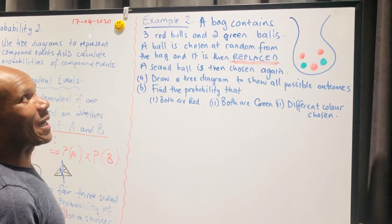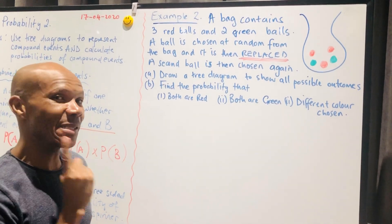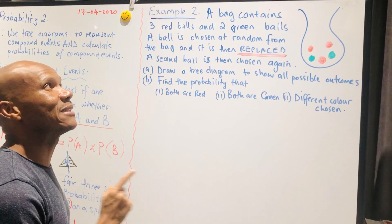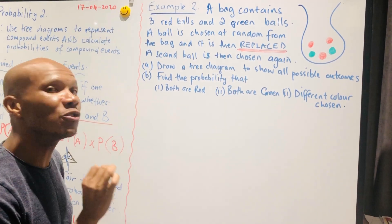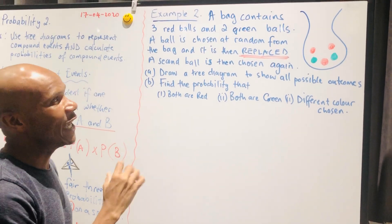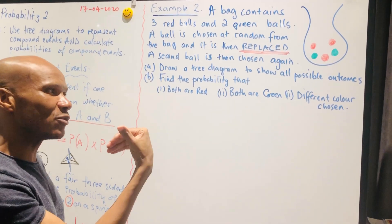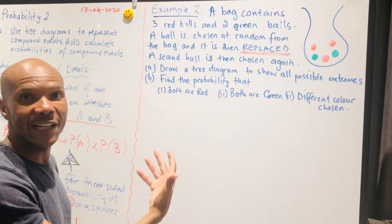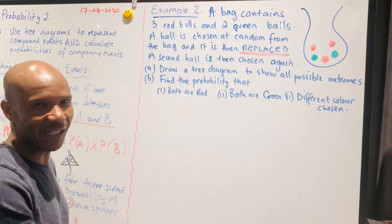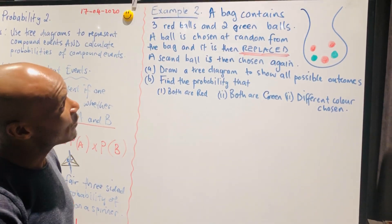All right guys, I'm back again with example two on our combined events, but now we're going to look at a tree diagram and we're going to use this example to draw a tree diagram and to use it to calculate the probabilities.